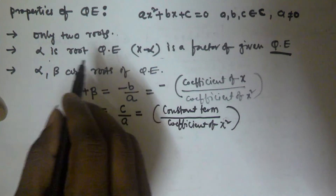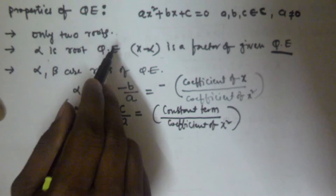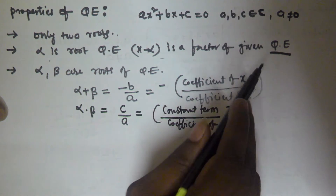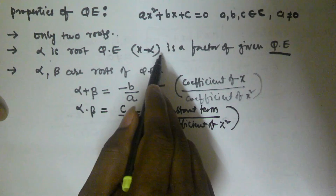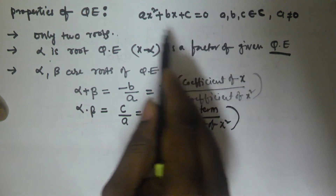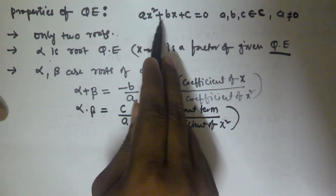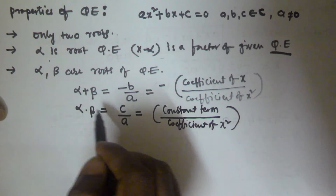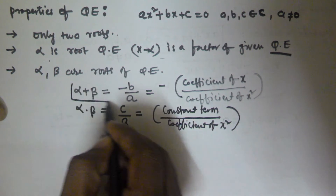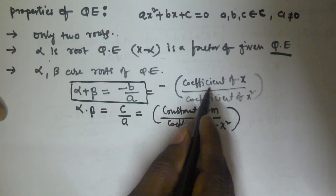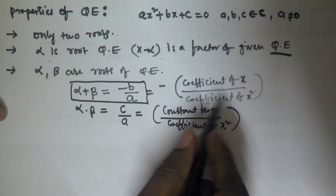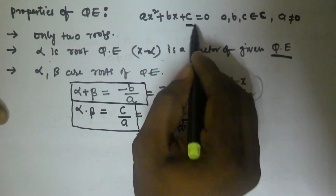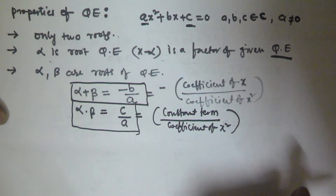So, what are the properties of the quadratic equation? First, a quadratic equation has only two roots. Second, if alpha is a root of the quadratic equation, then (x minus alpha) is a factor of the given equation. Third, if the equation is ax² + bx + c = 0 and alpha, beta are the roots, then the sum of the roots is minus b by a, where b is the coefficient of x and a is the coefficient of x squared. The product of the two roots is c by a, where c is the constant term.